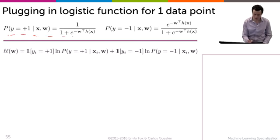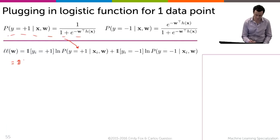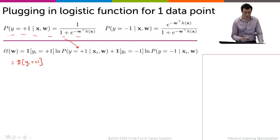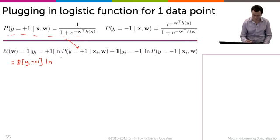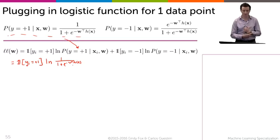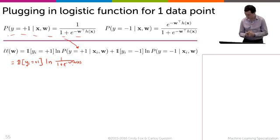So I'm going to first plug in the probability y equals plus 1 into the first term. So we're going to have that the log likelihood function is the indicator that y_i is equal to plus 1, and we're only going to deal with one data point for now, then sum over data points later. So we get the log of that ratio: 1 over 1 plus e to the minus w transpose h of x_i. That was the first term.